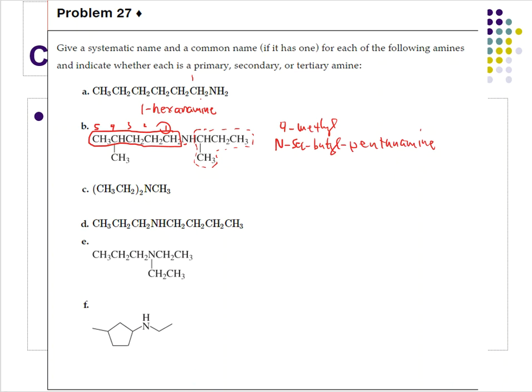If you mess up the order of 4-methyl and N-sec-butyl and flip them around, it's no big deal — I still give you credit. All the major pieces are there; you just didn't put them in the preferred order, and that's not a problem.